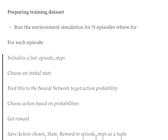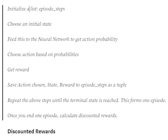For each episode, we initialize empty lists, then choose the initial state using environment.reset() in OpenAI Gym. We feed this initial state into the neural network, which gives us action probabilities. Depending on those probabilities, we take an action, get the reward, and save the state, reward, and action in separate lists or tuples. We repeat this until we reach the terminal state.